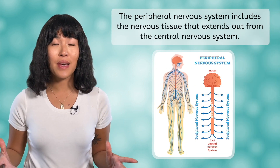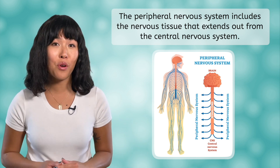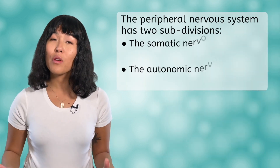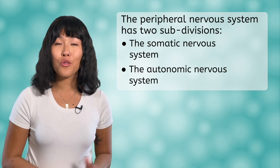Think about what the perimeter of a shape is — it is the distance around the shape. The prefix 'peri' means around, which is why peripheral is the right adjective for the peripheral nervous system. Where the central nervous system is in the center of the body, the peripheral nervous system contains the nerve tissues that spread out from the spinal cord into the trunk and limbs. The peripheral nervous system is made of two subdivisions: the somatic and autonomic systems.